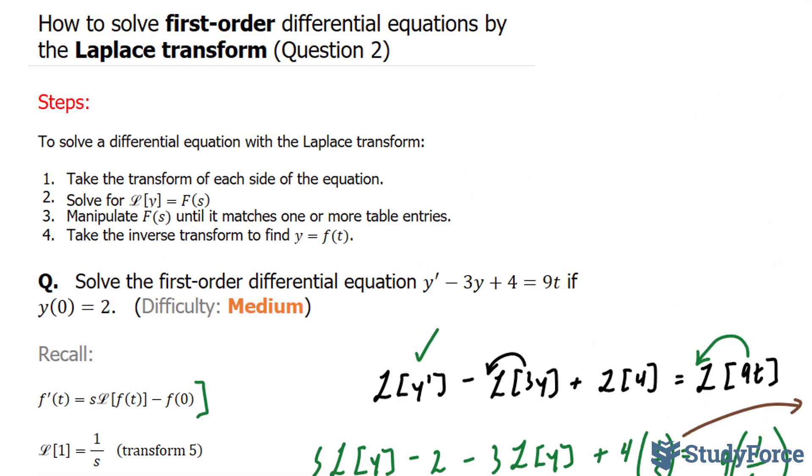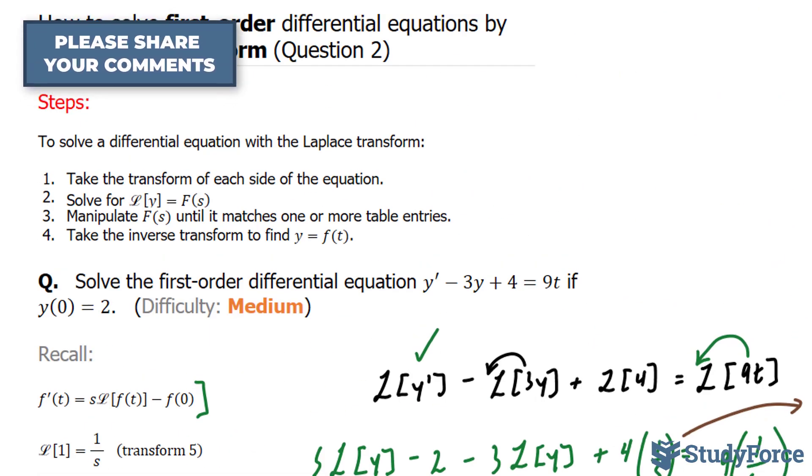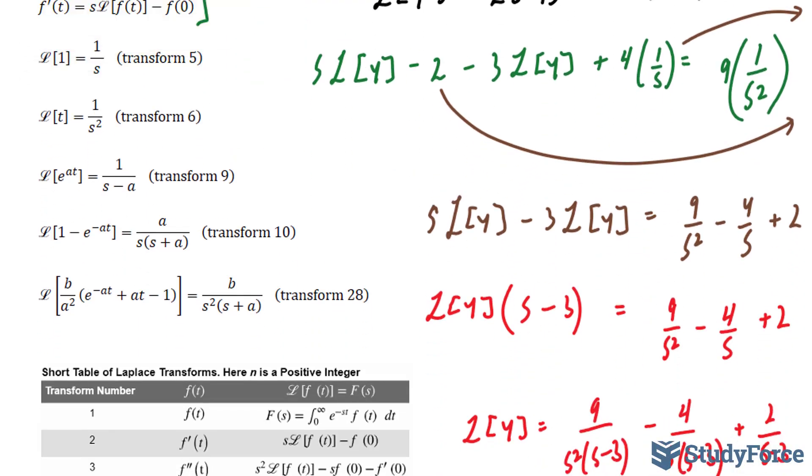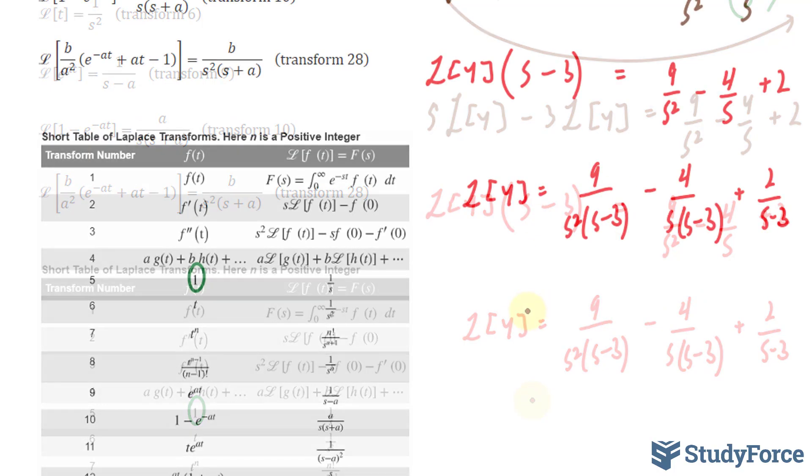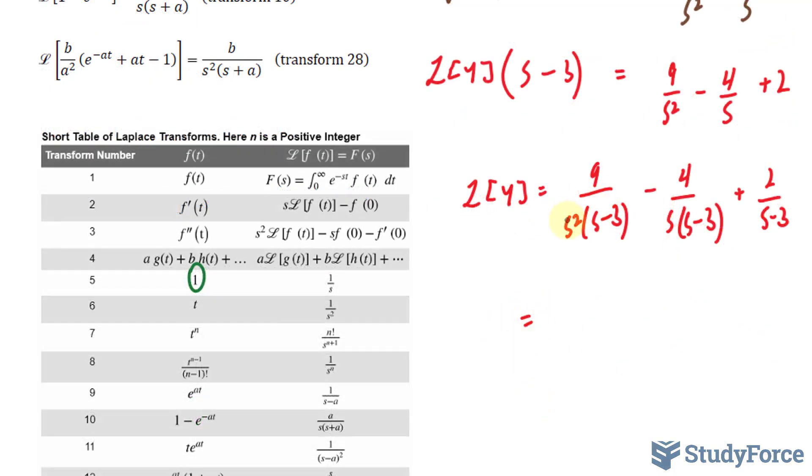Now in step number 3, they want us to manipulate it until it matches one or more of the table entries. I've already found them for you, but if you're given the table, you can do it yourself manually. Notice that this one matches transform 9, this one matches transform 10, and this one matches transform 28.